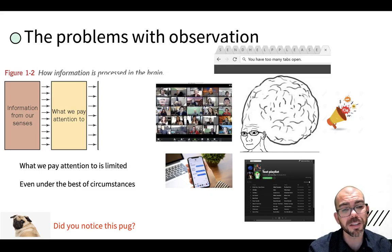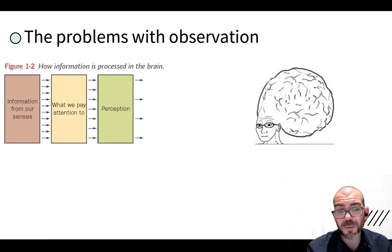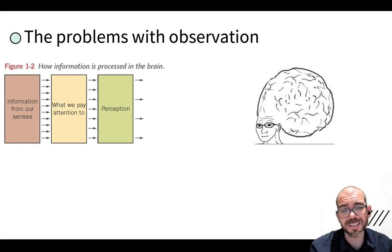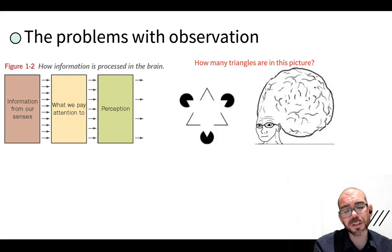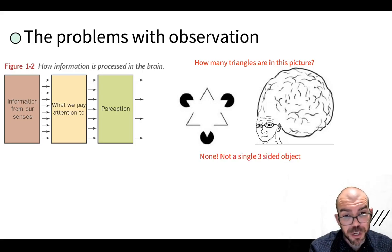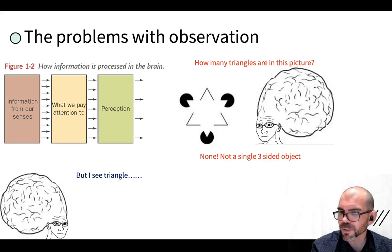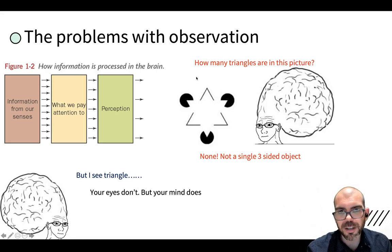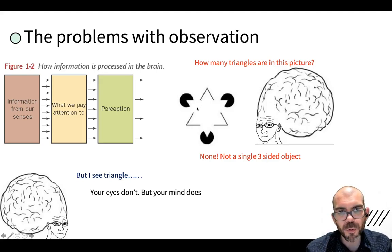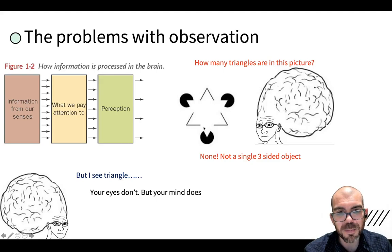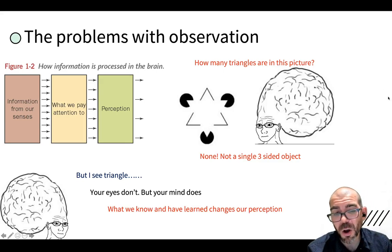During a crime scene, a person may not be paying attention to everything going on around them. After that we have perception. We have information coming in from our senses, we're selectively paying attention to a little bit, and how we perceive things itself isn't straightforward. For example, how many triangles are in this picture? The answer is none — there is not a single three-sided object in this image. But your brain probably sees a triangle. Your mind is perceiving a triangle, but your senses aren't picking up one at all. There are breaks in the lines on each side — your brain is filling in the missing information as if that triangle exists.